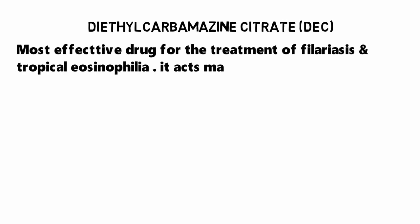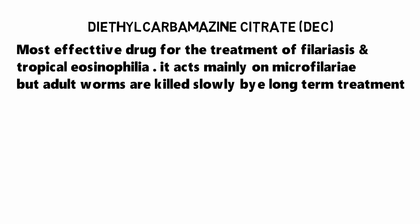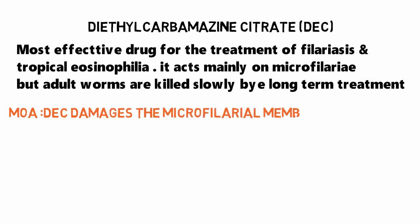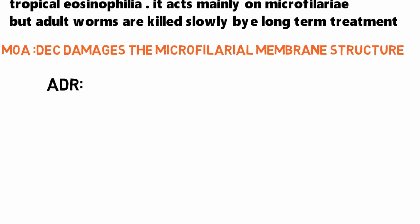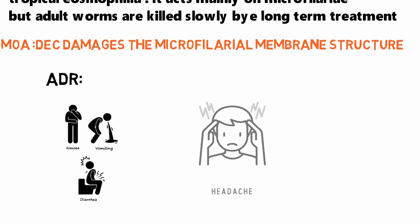The next drug is diethylcarbamazine citrate, given as a citrate salt, otherwise known as DEC. It is the most effective drug for treatment of filariasis and tropical eosinophilia. It acts mainly on microfilariae, but adult worms are killed slowly by long-term treatment. The mechanism of action is that DEC damages the microfilarial membrane structure. The adverse drug reactions include nausea, vomiting, diarrhea as GI disturbances, and headache and dizziness as common side effects.